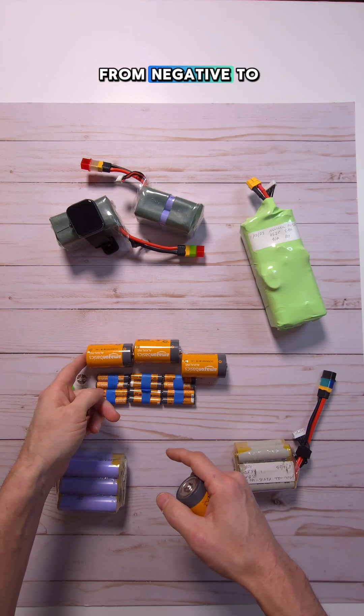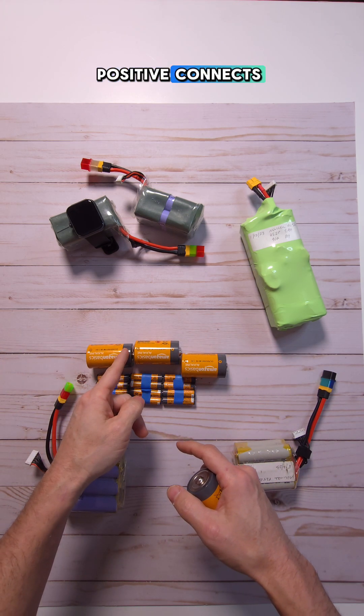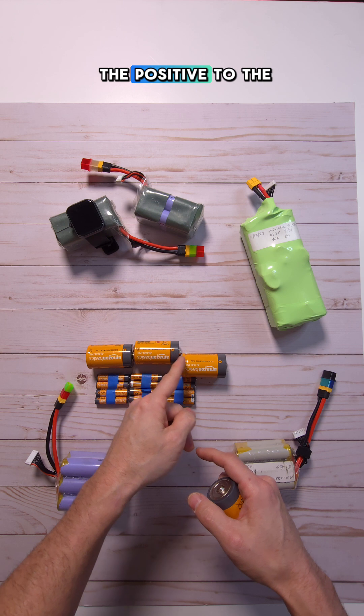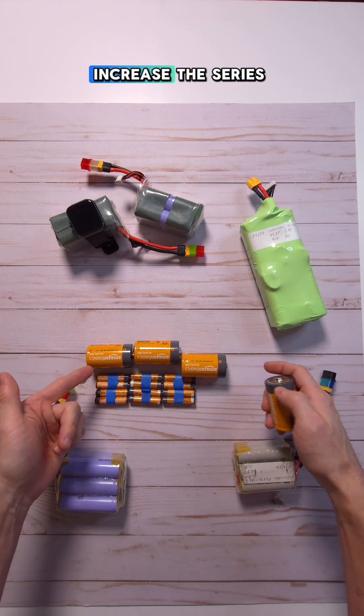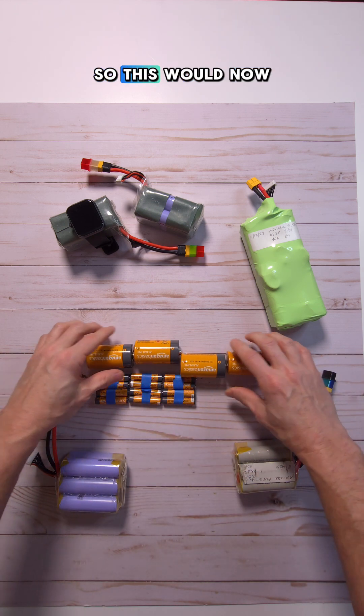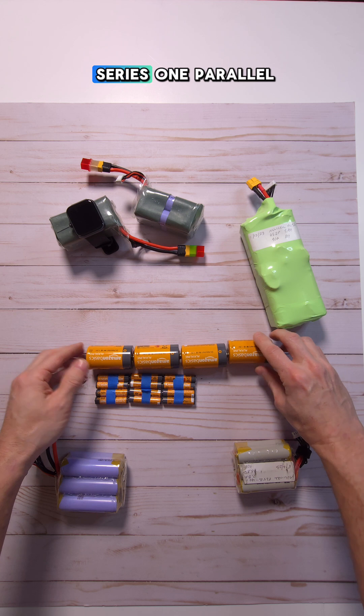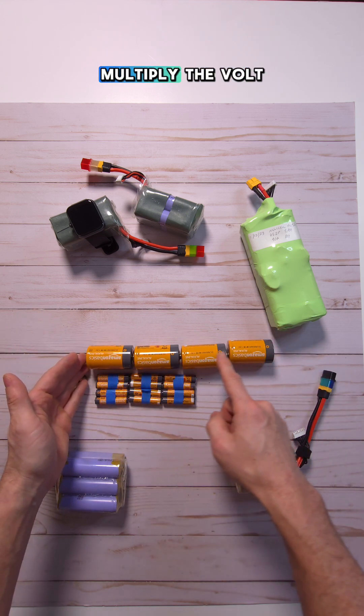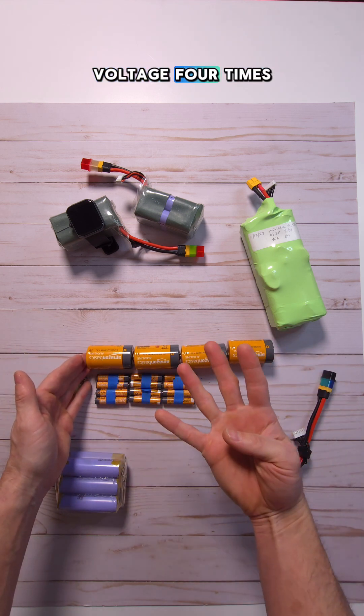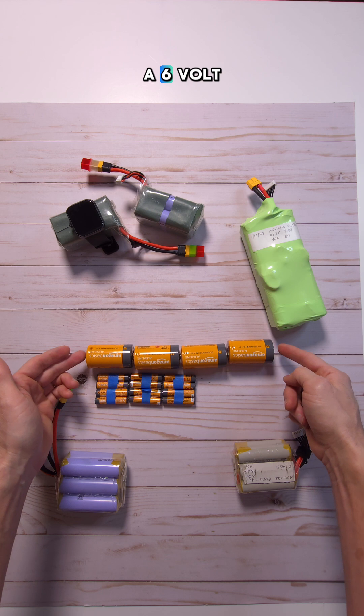And the more that you put together from negative to positive, positive connects to that negative, to the positive, to the negative, that's going to increase the series count. So this would now be a four in series, one parallel. This is going to multiply the voltage four times. So now we have a six volt battery.